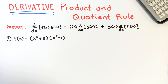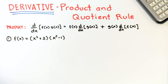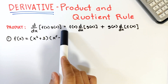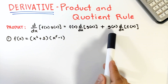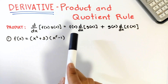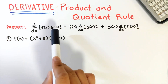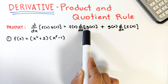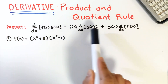In this video I will illustrate how to use the product and quotient rule in finding the derivative of a function. The product rule states that the derivative of f times g is equal to f times the derivative of g, plus g times the derivative of f. For the first term of the answer, copy the first factor and differentiate the second factor, then plus copy the second factor and differentiate the first factor.